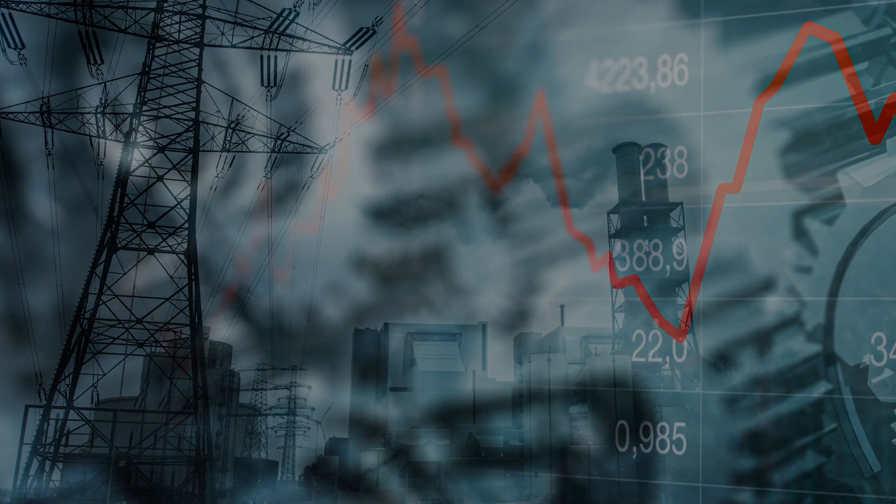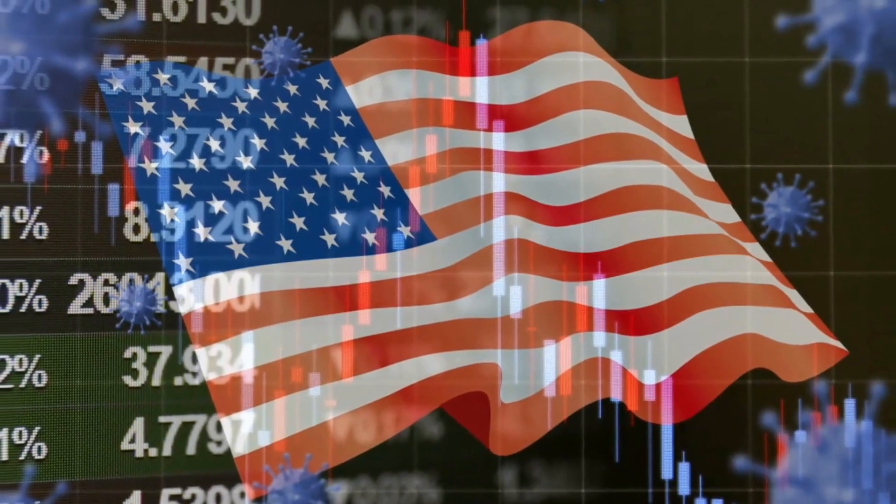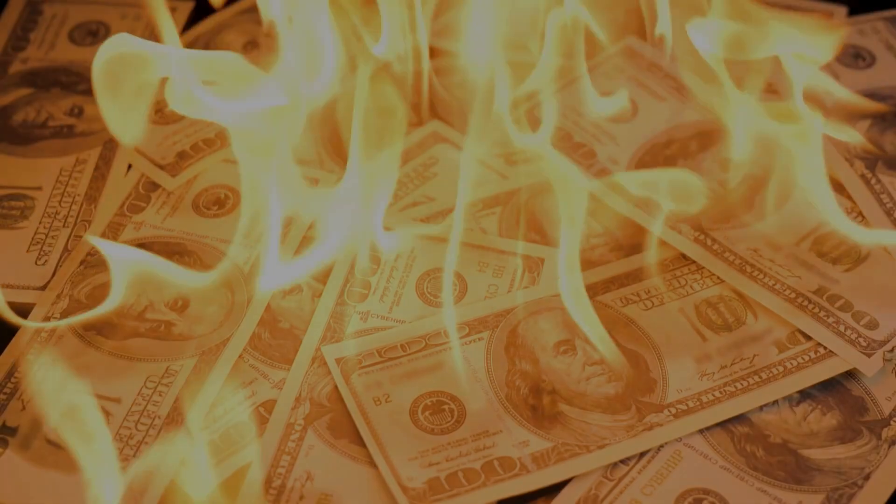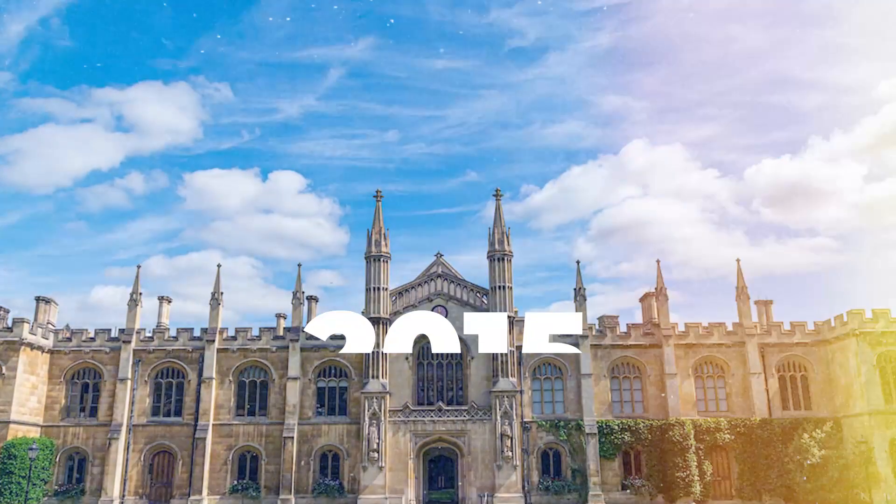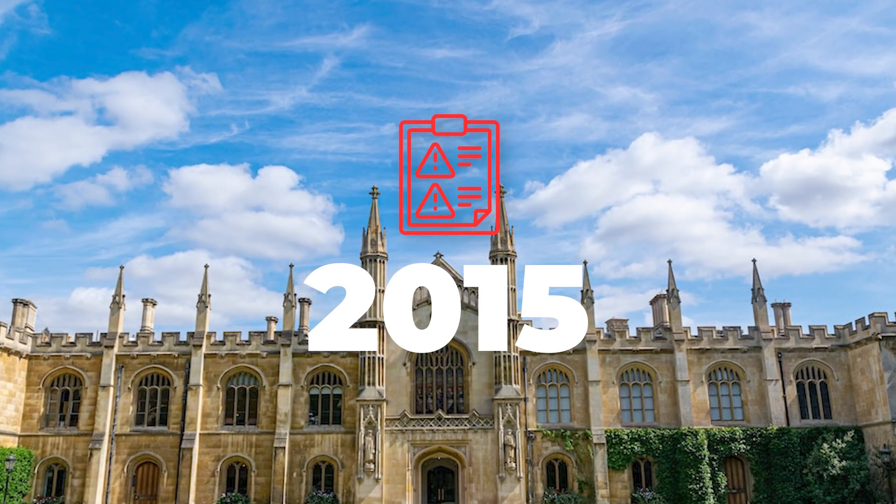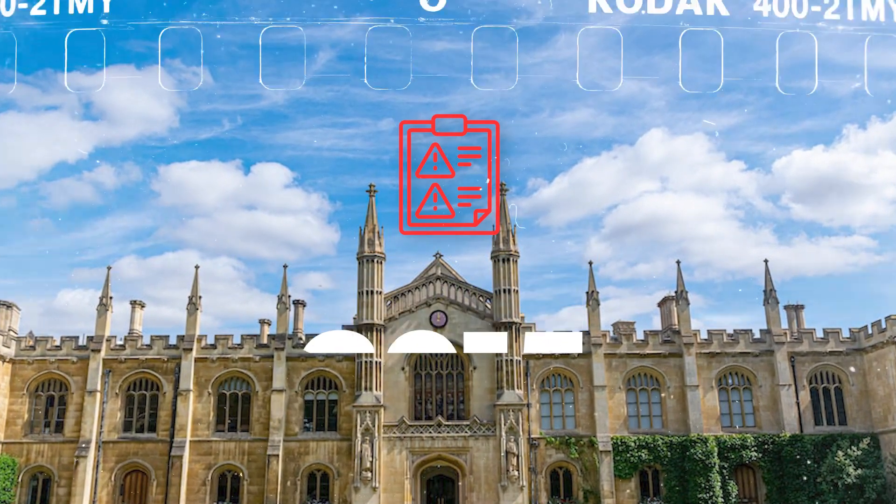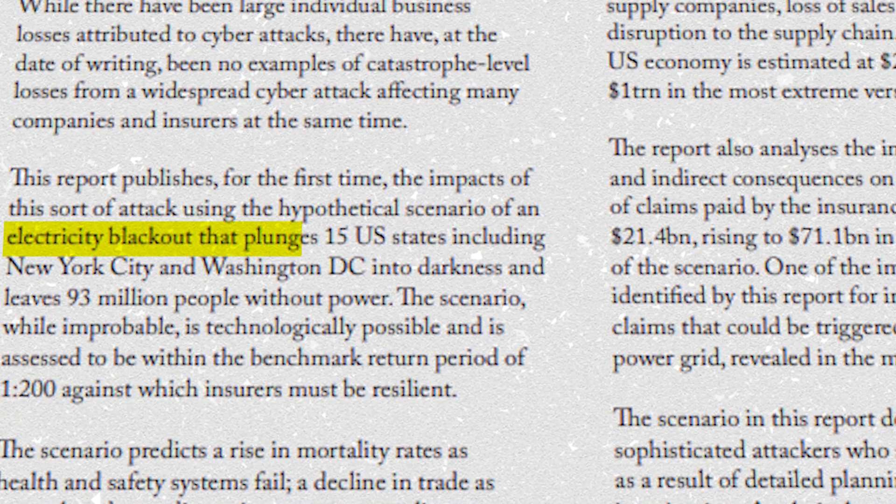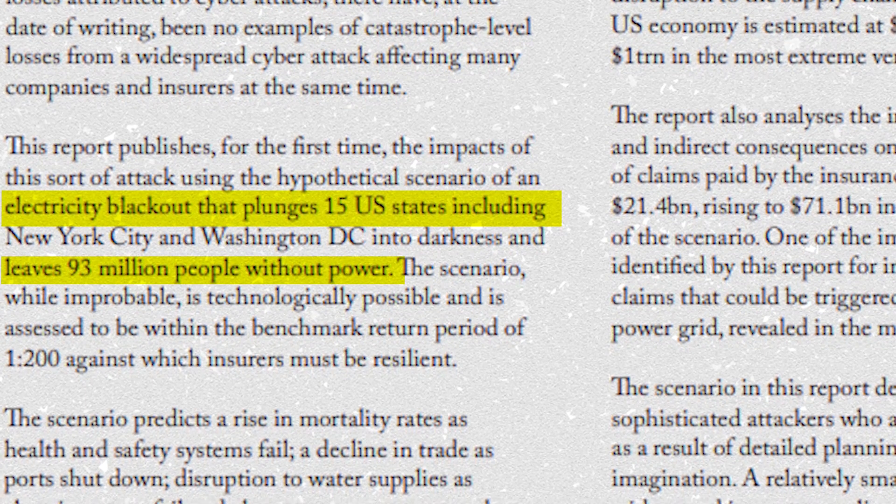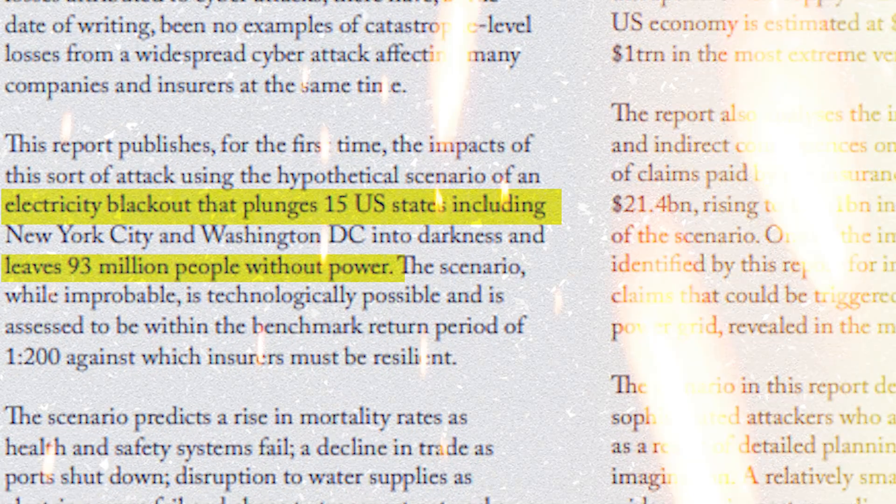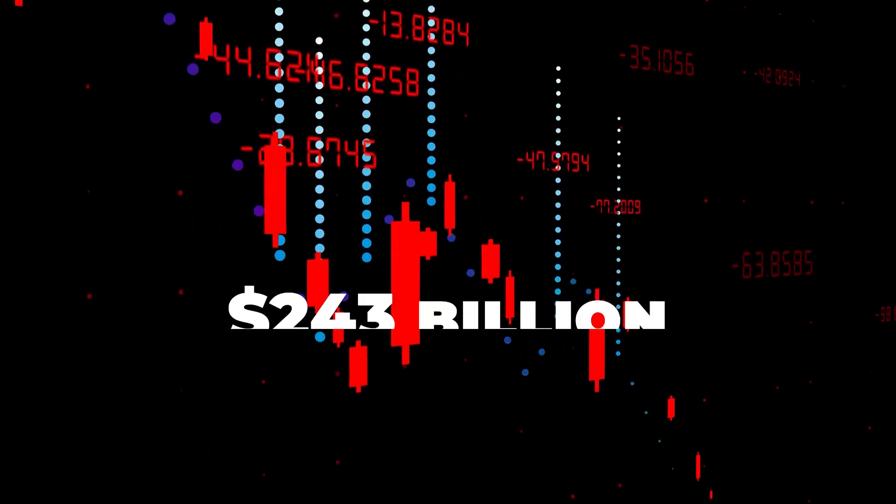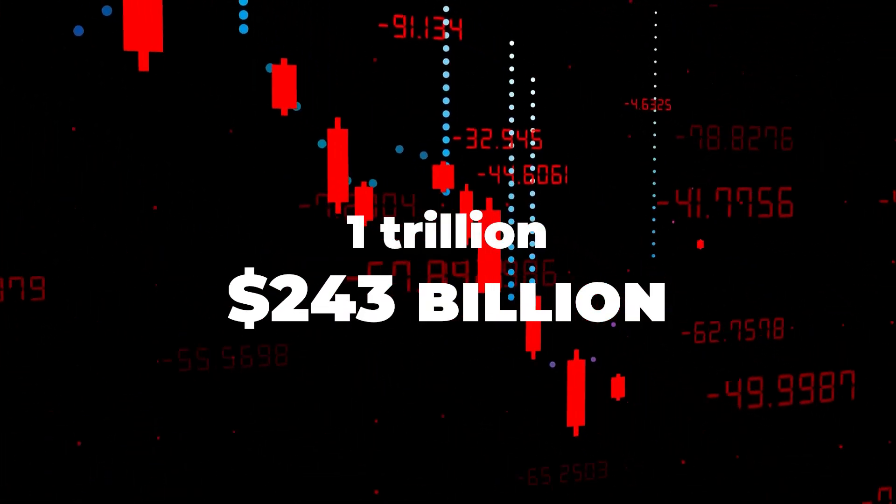There would be serious economic consequences if the American power grid went down. Even if only a portion of the country lost power, the amount of money lost would be staggering. In 2015, the University of Cambridge put out a risk report exploring what might happen if part of the United States power grid went down. For their analysis, they proposed that 15 U.S. states lost power. This area of the country was estimated to contain approximately 93 million people. When the study examined the potential economic loss, it found that this number could be anywhere between $243 billion to $1 trillion.